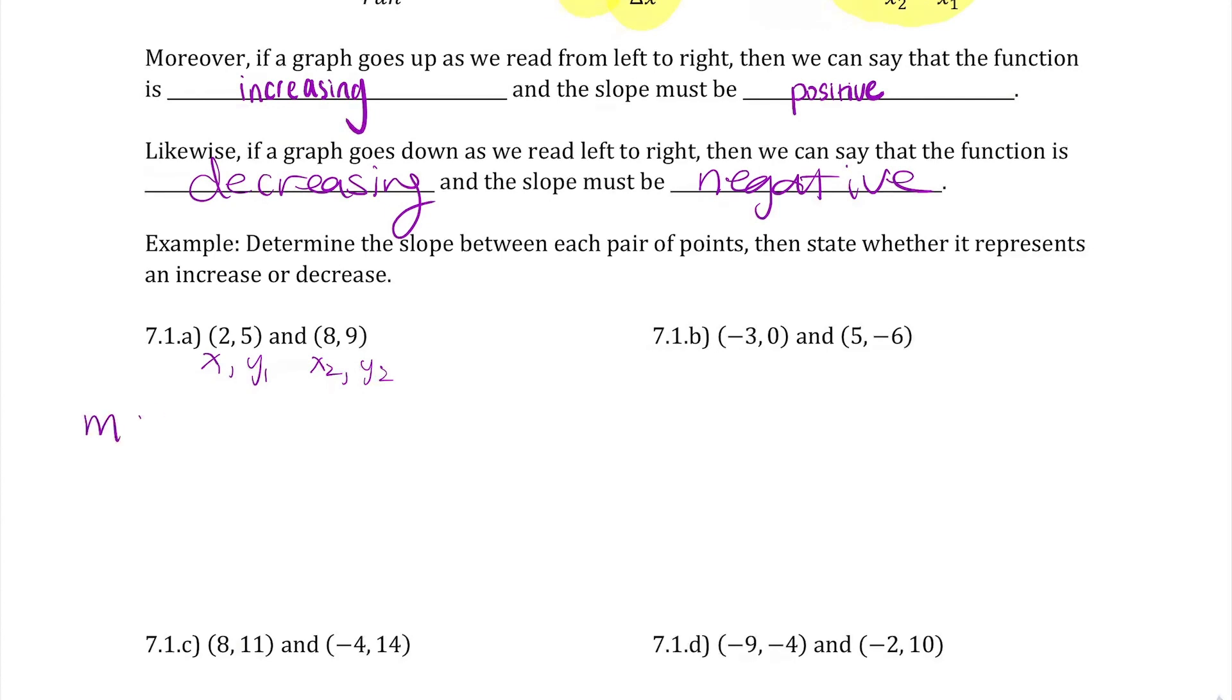So let's start here. If you want to label your points x1, y1, x2, y2, you can feel free. Then you're going to just plug in to our slope formula. So I'm going to take my y2, I'm going to subtract my y1, I'm going to divide by my x2 subtracting x1. And then we're going to follow BEDMAS, so remember that there's implied brackets in the numerator and the denominator, so we're going to solve those first to get 4 over 6, and then we always reduce to our final answer to get 2 thirds in this case. Since we have a positive slope, then we know that the graph will be increasing.